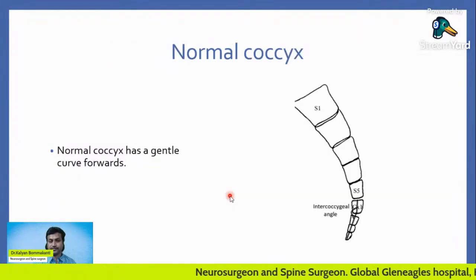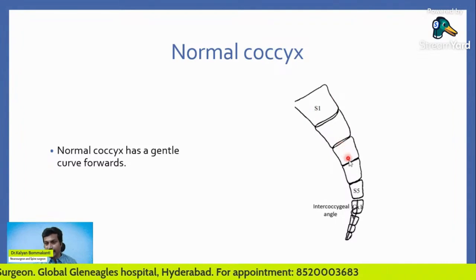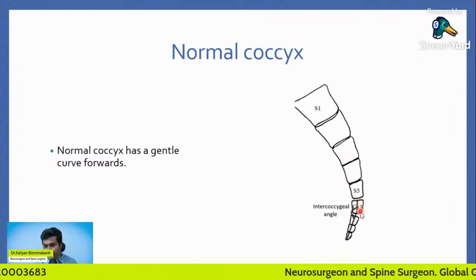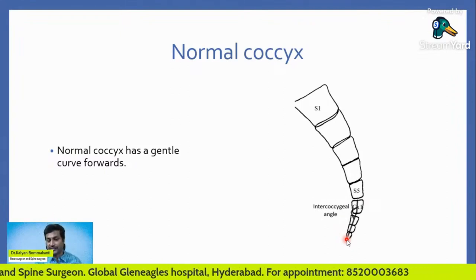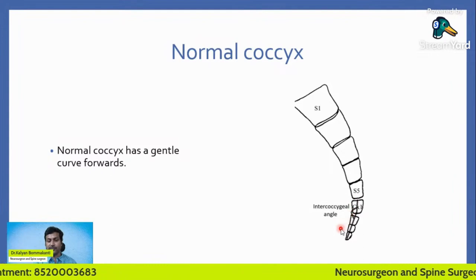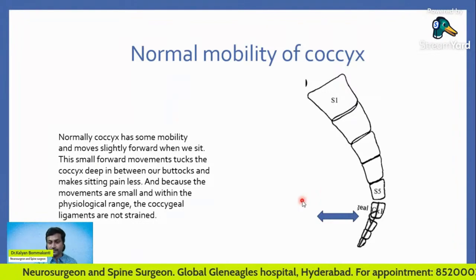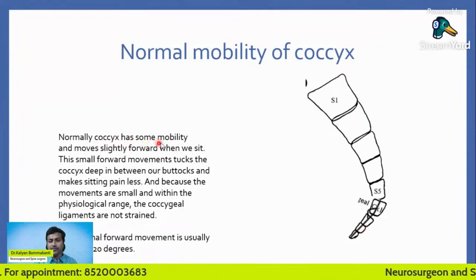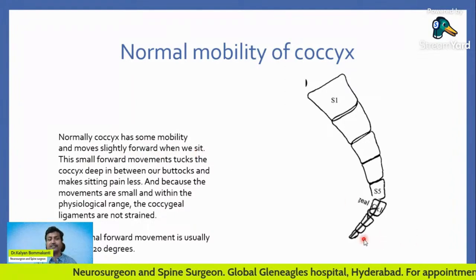Observe this picture. This is the sacrum: S1, S2, S3, S4, S5 — these are the five segments of the sacrum. The last segments labeled C1, C2, C3, C4 — these small segments of bone located down between both buttocks — form the coccyx, or tailbone. The normal coccyx has a gentle curve forwards. Normally, the coccyx has some mobility and moves slightly forward when you sit — this is normal.